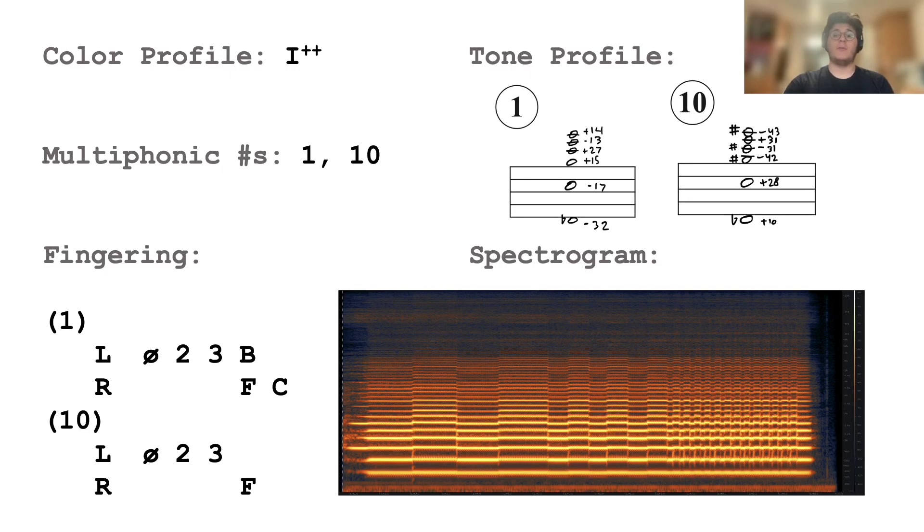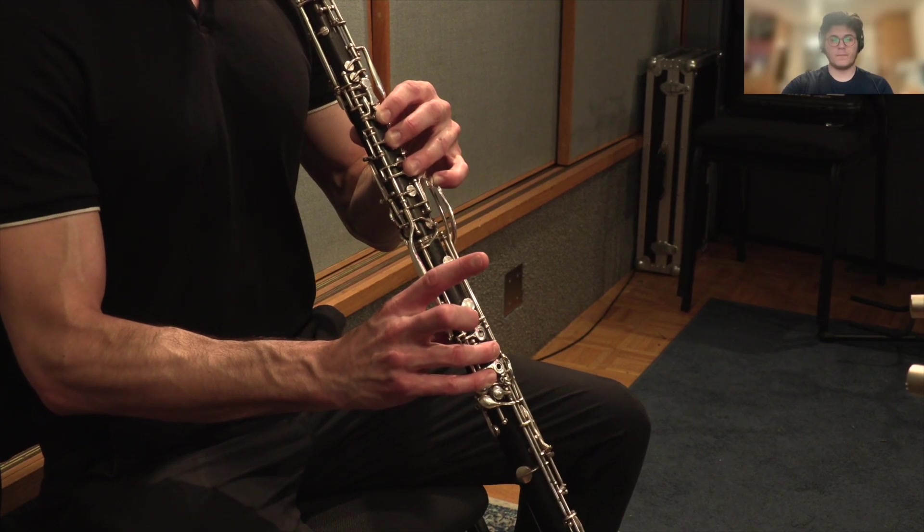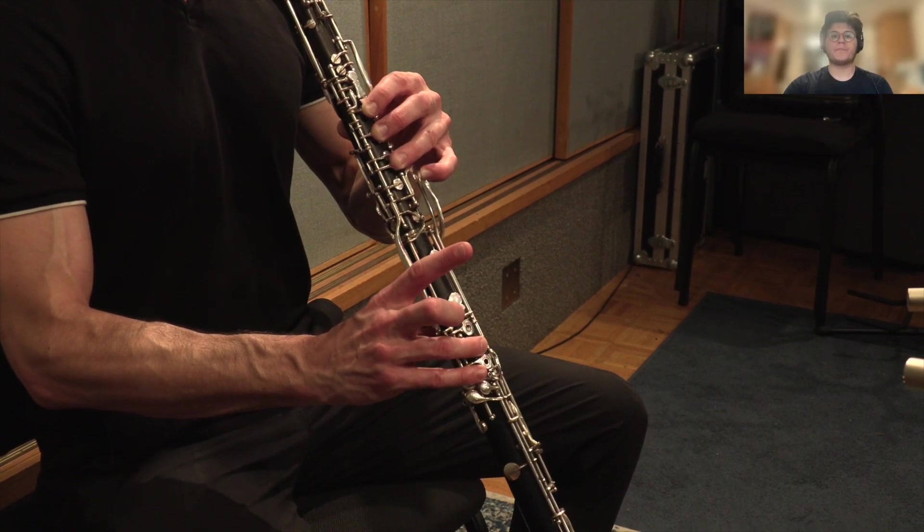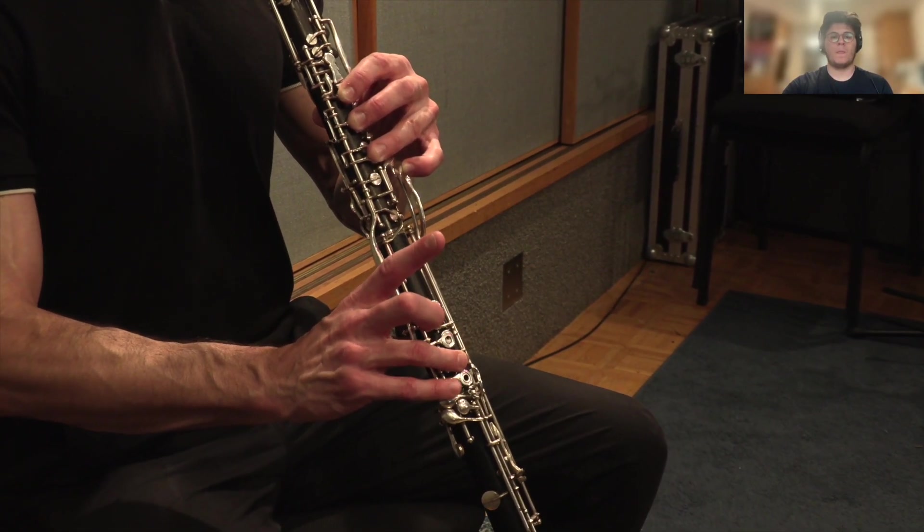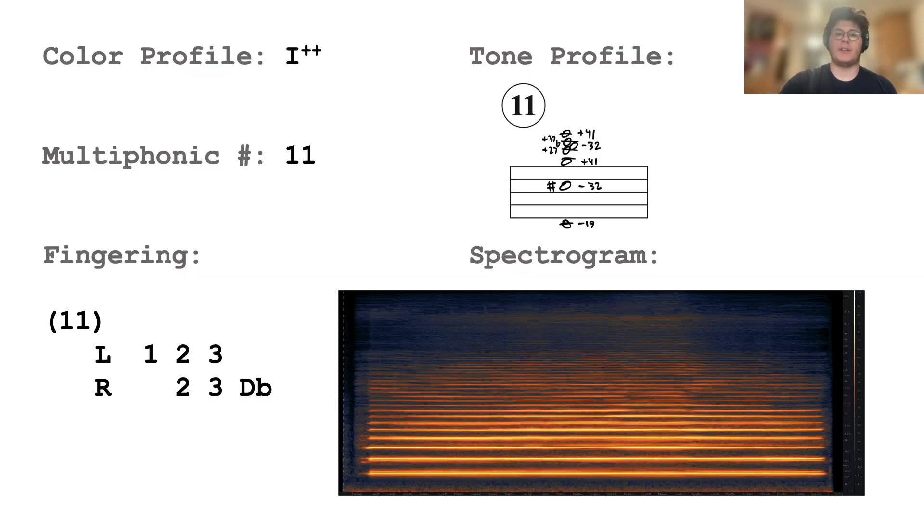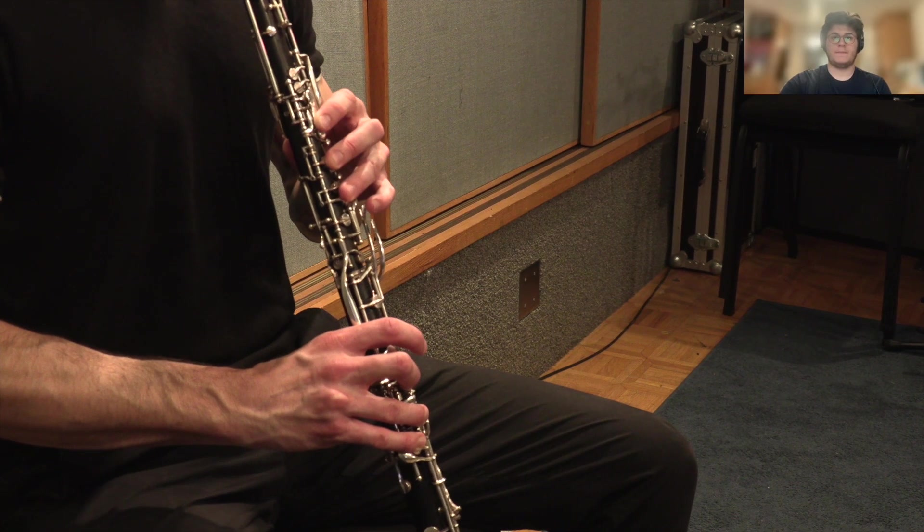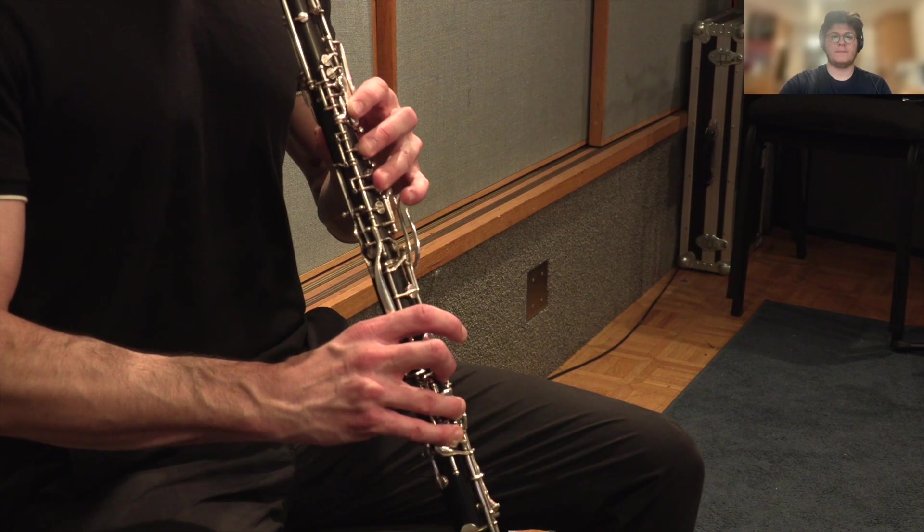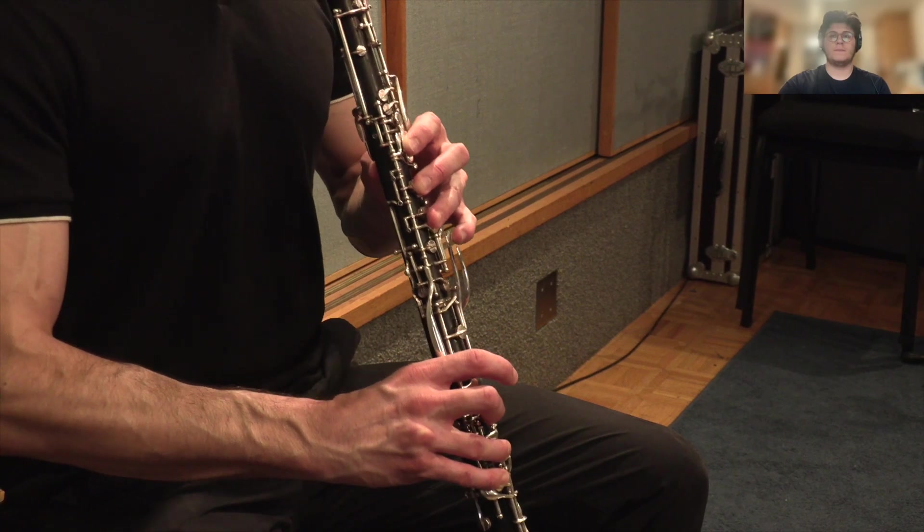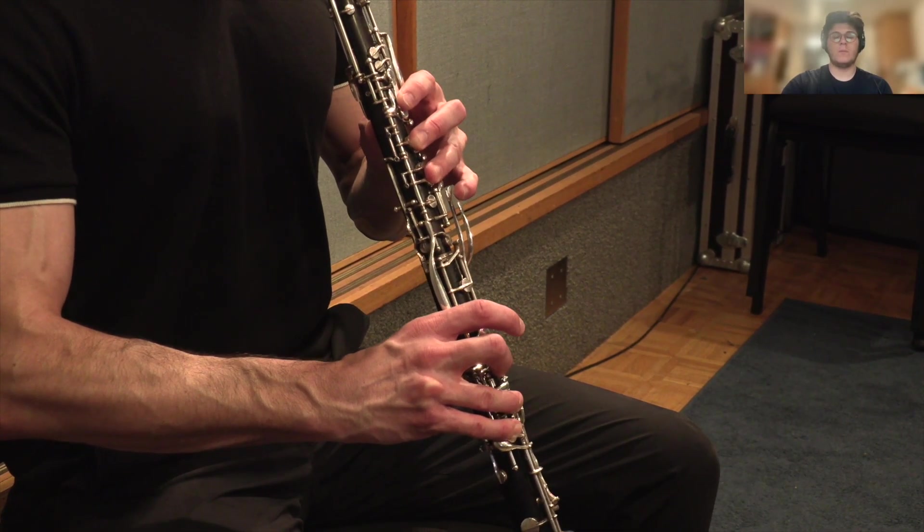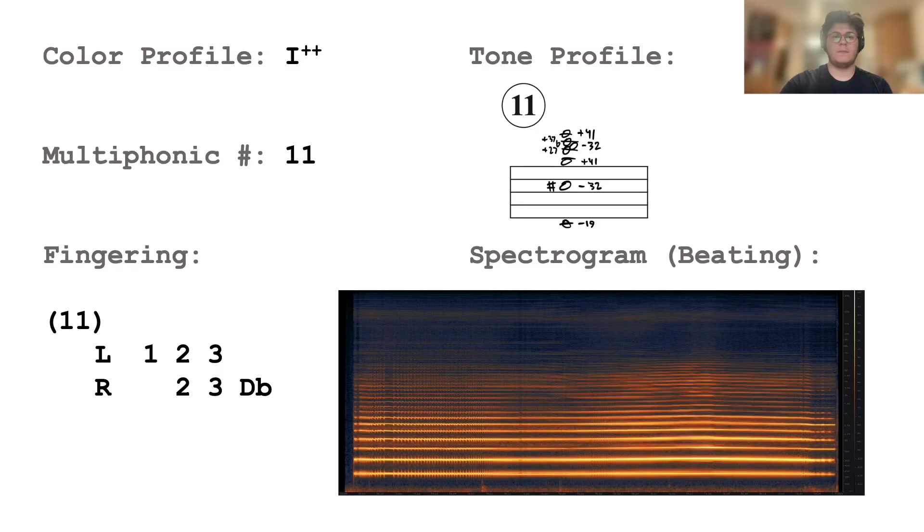This is the second color profile we consider adjacent to color profile one. This fingering toggles between color profile one and its second adjacent via the C key. This fingering resides in the second adjacent to color profile one exclusively. It has a very large dynamic range. This multiphonic is also very flexible with regards to controlling beating. The performer found it helpful to pull the reed out slightly for this effect.